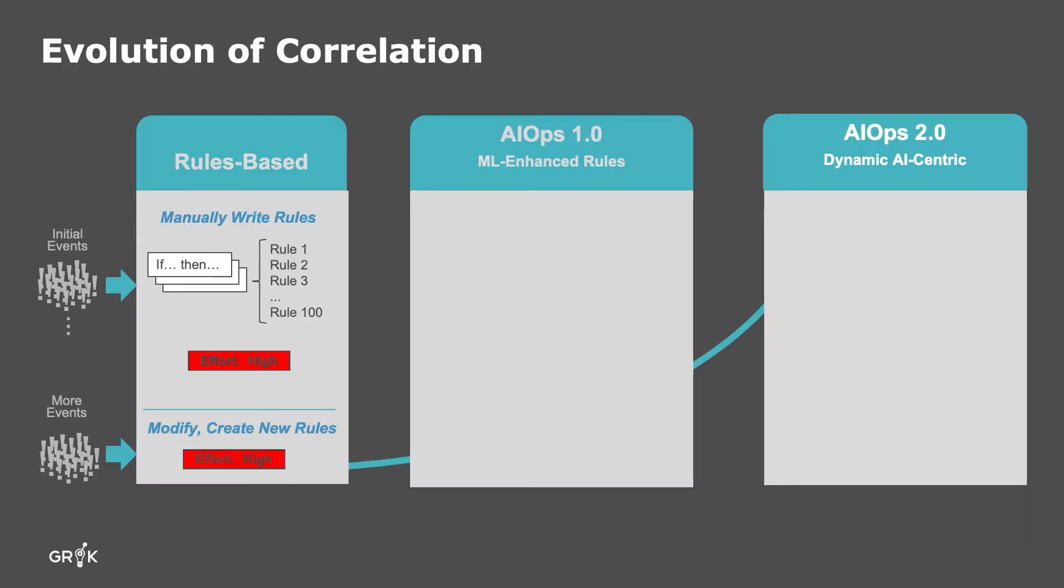We can quickly look at the approaches that organizations have taken to address these issues. Many organizations start with a rules-based approach. They manually create rules or scripts and try to group telemetry data based on underlying causes. However, this approach has many limitations.